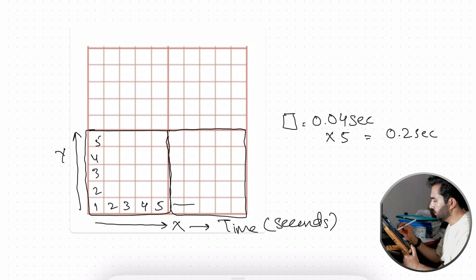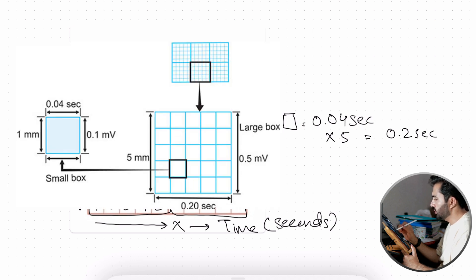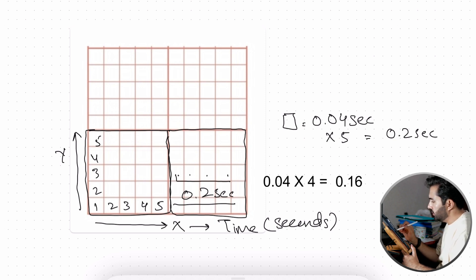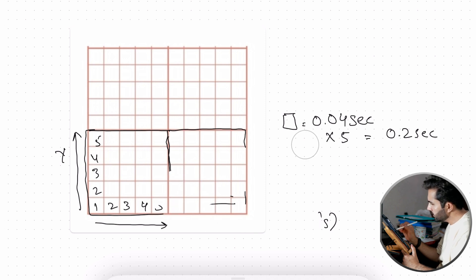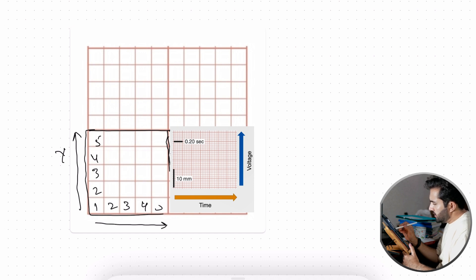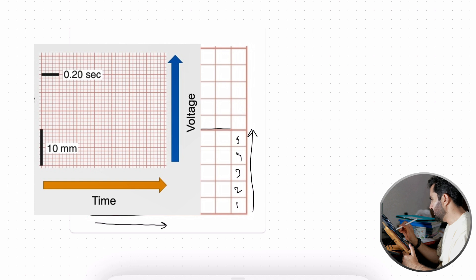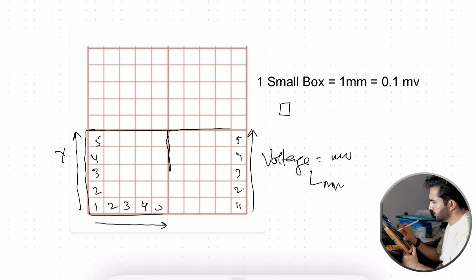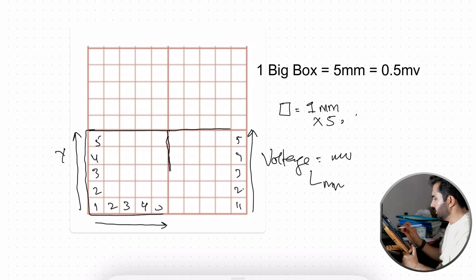Each big box equals 5 small boxes, which means one big box equals 0.2 seconds horizontally. This is a key point to remember. For example, for the PR Interval, which is very important, we count the small boxes. Vertically, the ECG represents voltage in millivolts. One small box vertically equals 1 millimeter.